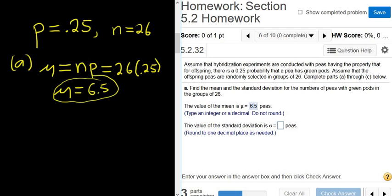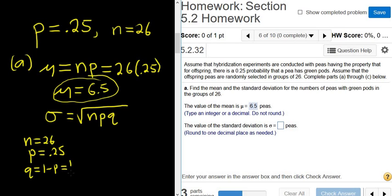Now it wants the standard deviation. The formula for the standard deviation was the square root of npq. So here n is 26, p is 0.25, q is 1 minus p, so q is 1 minus 0.25, so q is 0.75.